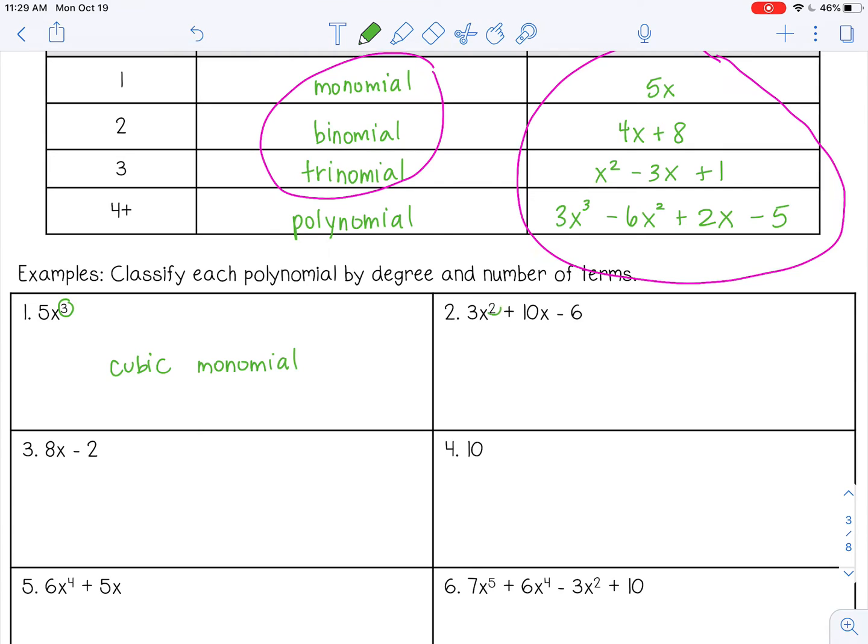Number two, the highest degree is two, so it's quadratic. And it has one, two, three terms, so it's a trinomial.